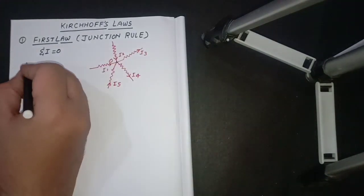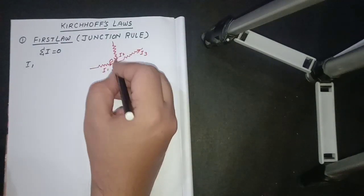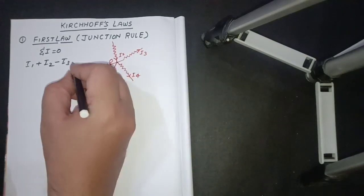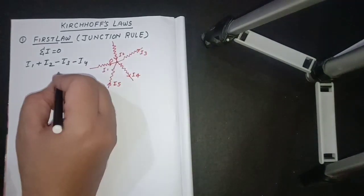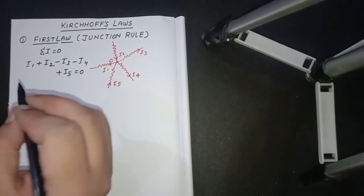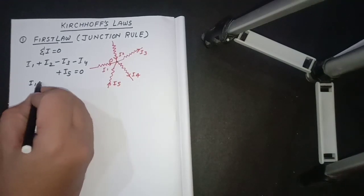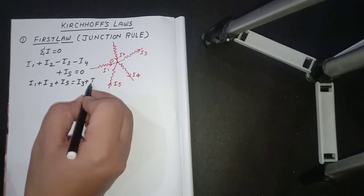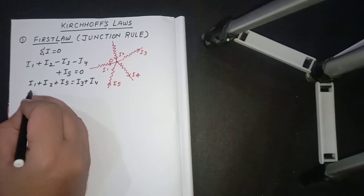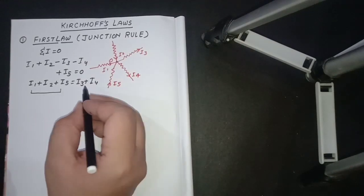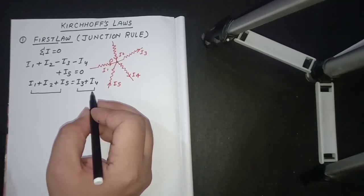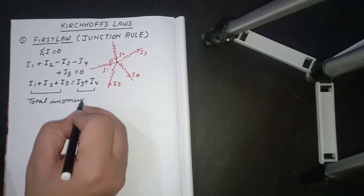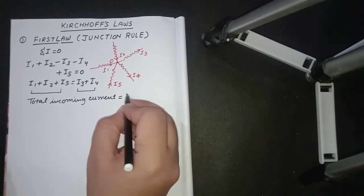So I1 is going towards the junction, so it will be taken as positive. Similarly, I2 is going towards the junction, so it will be taken as positive. I3 is leaving the junction, so it will be taken as negative. I4 is leaving the junction, so it will be taken as negative. I5 is going towards the junction, so it will be taken as positive. This sum is equal to zero. Taking the positive terms to one side, we get I1 plus I2 plus I5 is equal to I3 plus I4. So the sum of all currents going towards the junction equals the sum of the currents leaving the junction.